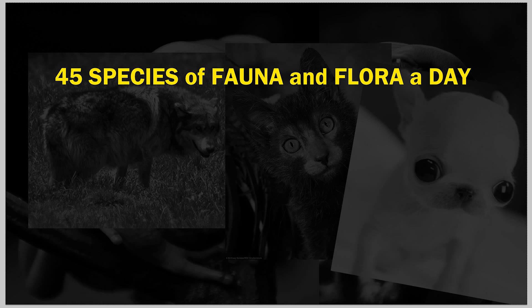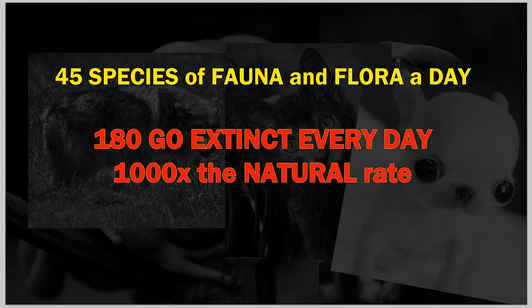We're still finding a lot of species every day, which is awesome. But on another note — 180 species go extinct every day. That's more than double what we're discovering. You might say it's natural for creatures to go extinct, but this amount is a thousand times the natural rate of extinction. Around 150 to 200 species go extinct every day due to human influence, pollution, and land use.